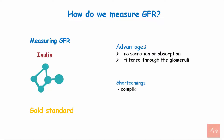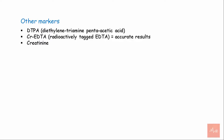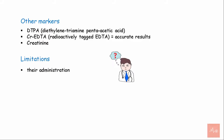However, there are certain shortcomings — it is a complicated process and it is expensive. Other markers used for measuring GFR include DTPA (diethylene triamine pentaacetic acid), radioactively tagged EDTA which gives accurate results, and renal clearance of creatinine. The problem with exogenous markers is their administration and performing the clearance measurements, so endogenous markers like creatinine are preferred.